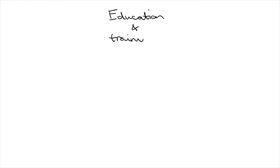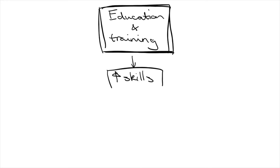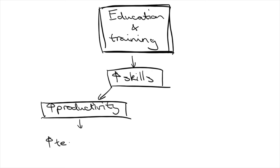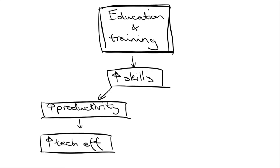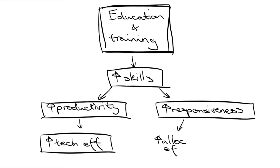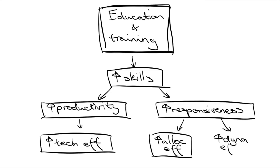Last but not least, let's look at education and training. Education and training is one of the best ways to increase efficiency in the labor market. Not only does it increase technical efficiency as labor becomes more skillful and therefore more productive, skilled workers are also more occupationally mobile. This means that their skill sets are more easily transferable, making them more responsive to structural change, which leads to allocative and dynamic efficiency.